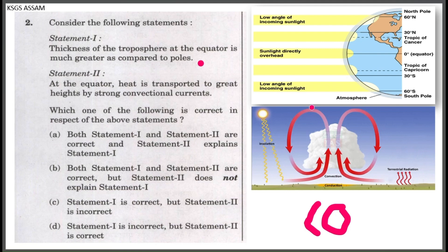At the equator, air is transported to great heights by strong convectional currents. Therefore, statement 1 and statement 2 are correct, and statement 2 explains statement 1. So option A is correct.